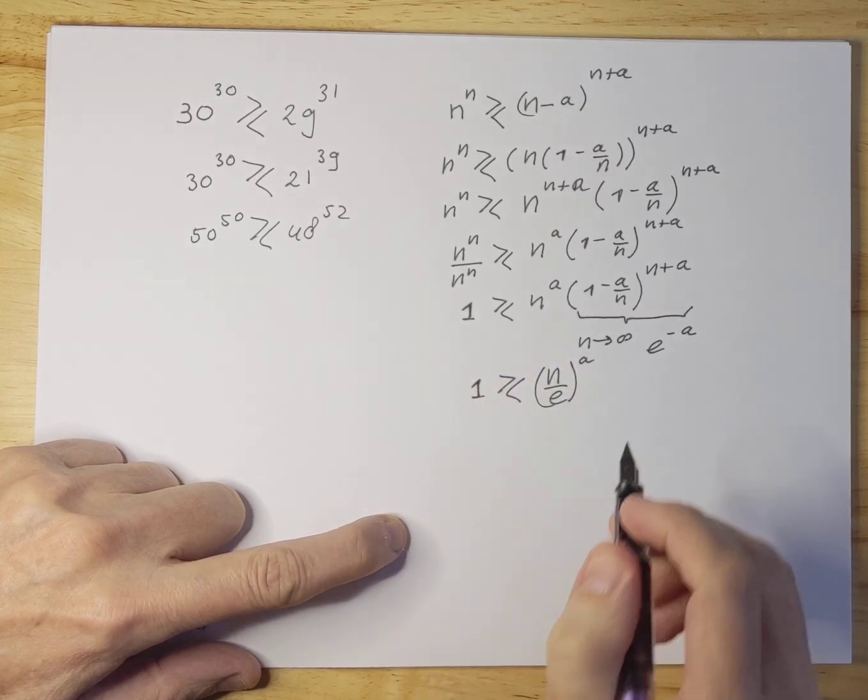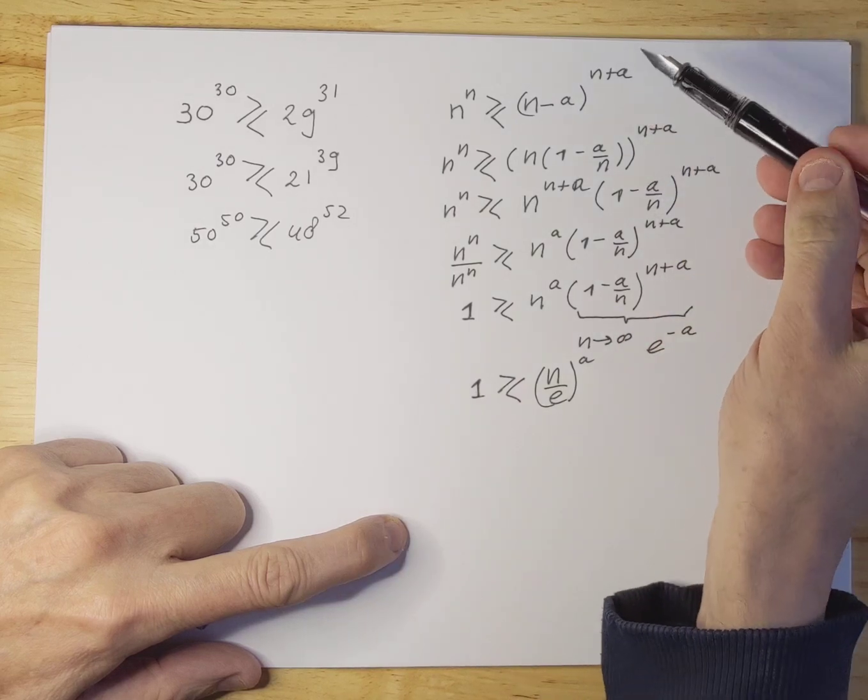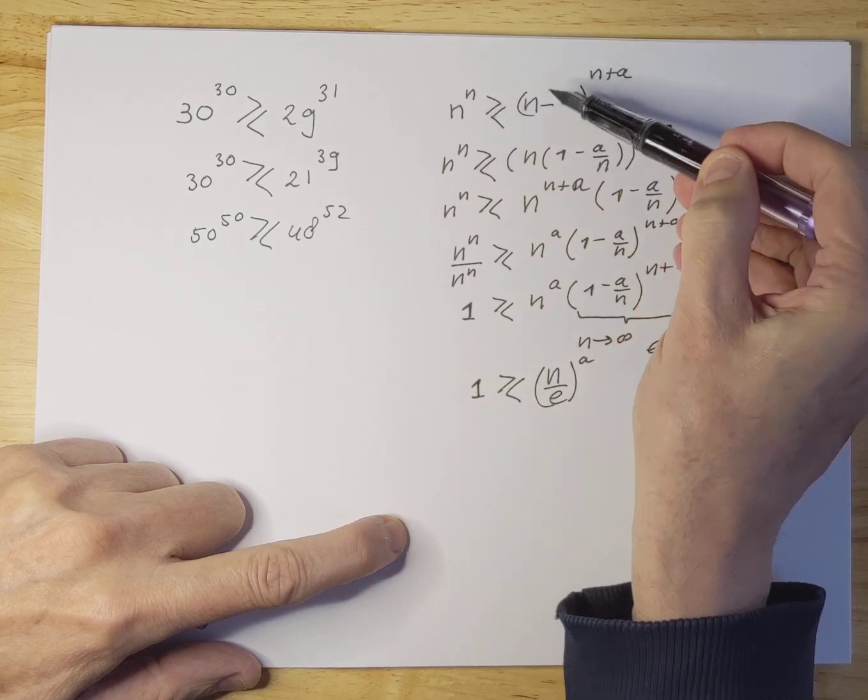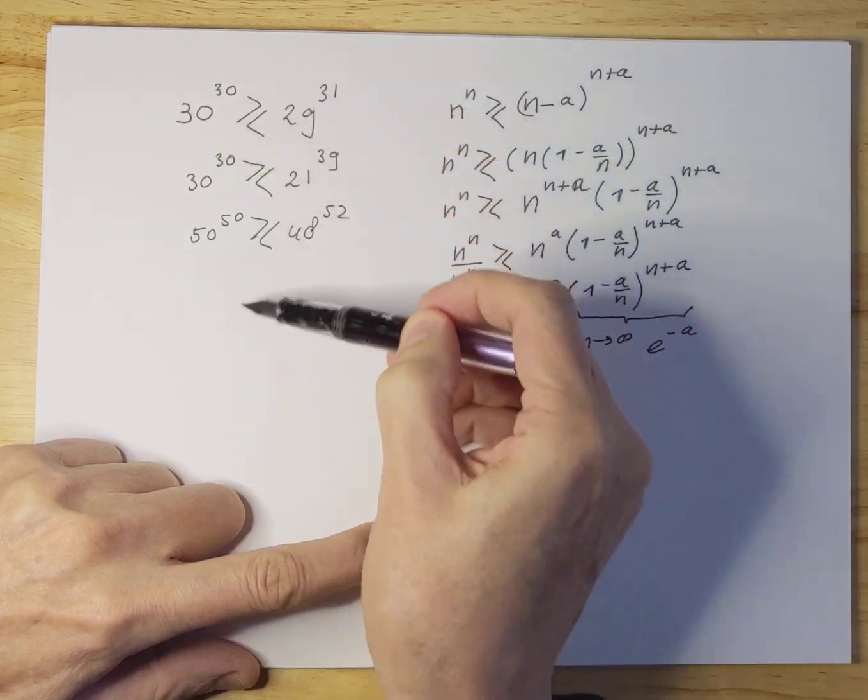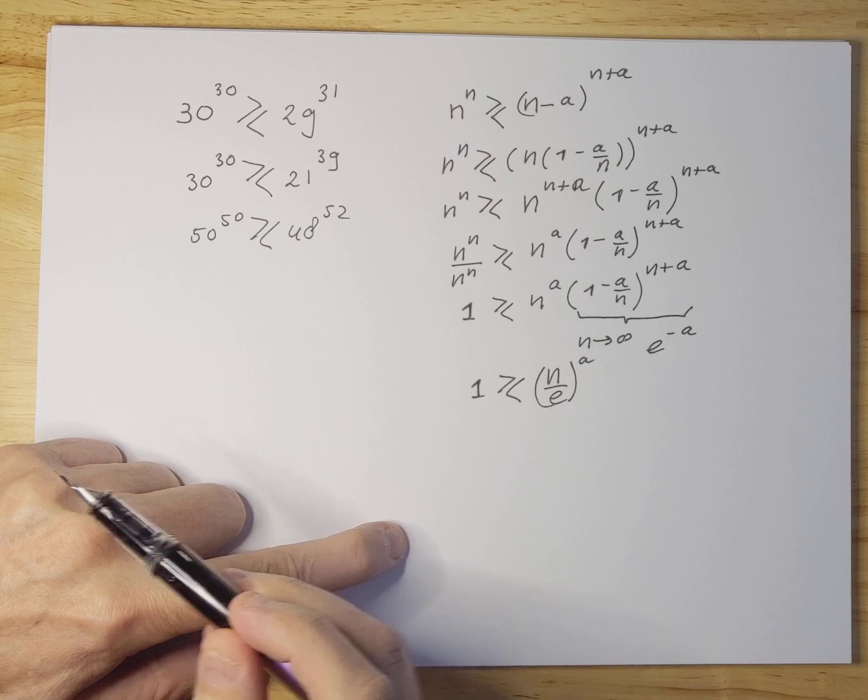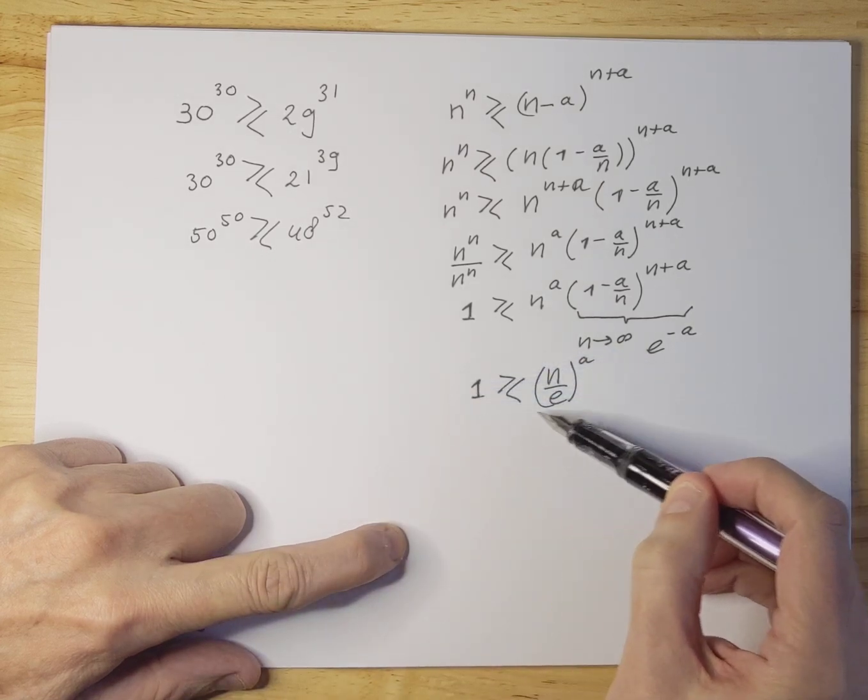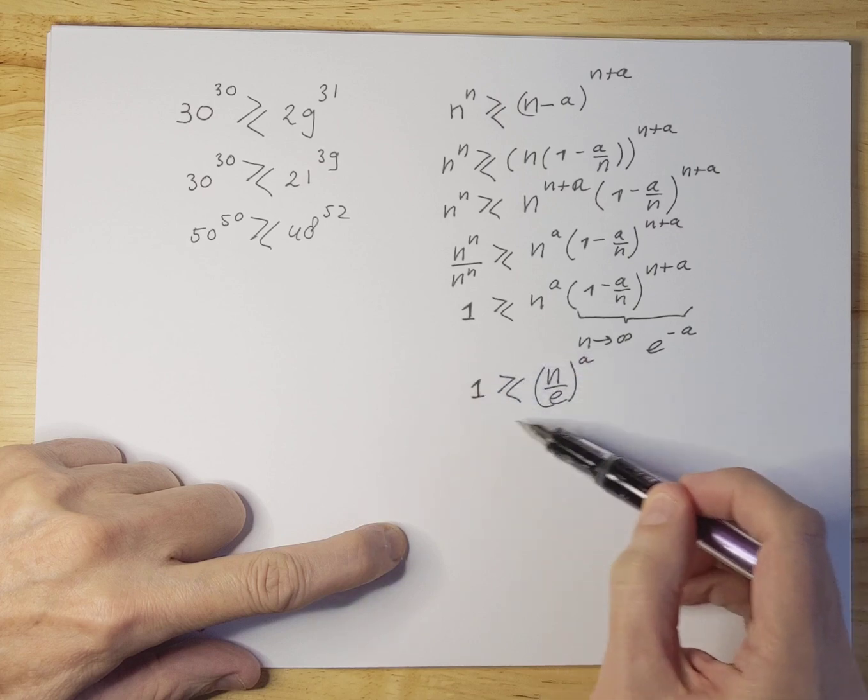So now we rewrote essentially this formula here which is a proxy for all these different exercises that you can do and we rewrote it into answering the question is this bigger or smaller than e.